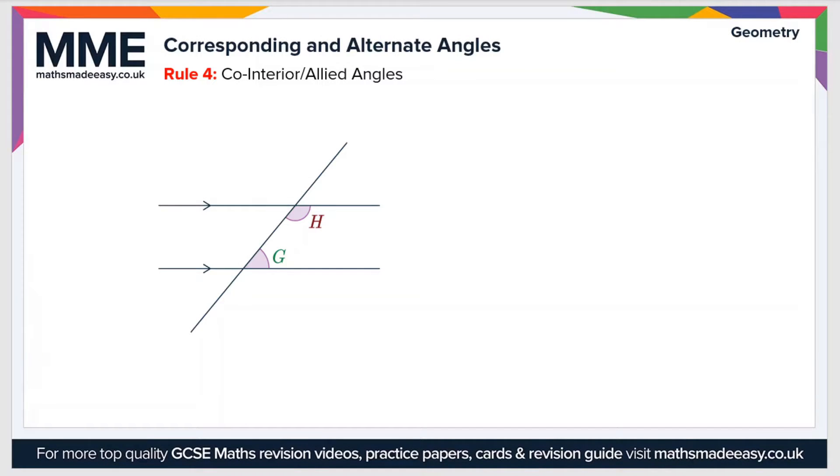Finally we have rule number four which surrounds co-interior angles. These are the angles that are formed on the inside when a straight line passes between these two parallel lines. So in this case we have angles H and G.